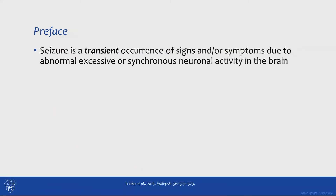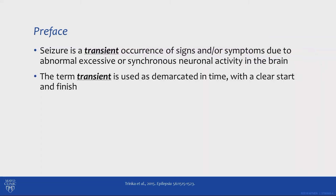Let's start off by defining seizures. Seizures are transient occurrences of signs or symptoms due to abnormal, excessive, or synchronous neuronal activity in the brain. The term transient is used to demarcate that a seizure usually has a beginning and an end, and most seizures do have a beginning and an end.